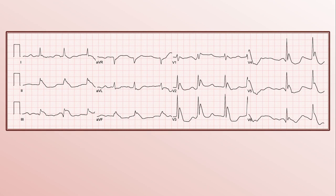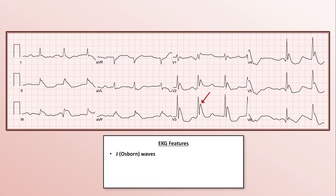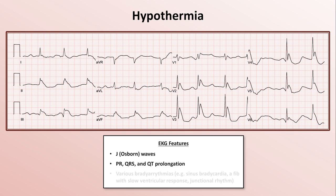Here's the EKG of an elderly person found down on the sidewalk. There is an irregularly irregular wide complex rhythm of about 72 beats per minute, no unambiguous regular atrial activity, so maybe AFib. If we look at V2 and V3, the QT seems prolonged. But what really stands out once you've noticed it is the unusual terminal deflection of the QRS complex — it looks sort of like an R' wave, but it's really wide. This is called a J wave, or more commonly in the US, an Osborne wave, the hallmark of hypothermia. Other EKG features seen in hypothermia include PR, QRS, and QT prolongation, and various bradyarrhythmias including AFib with slow ventricular response.